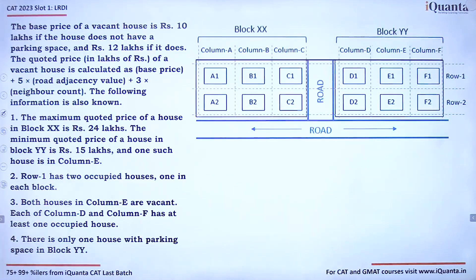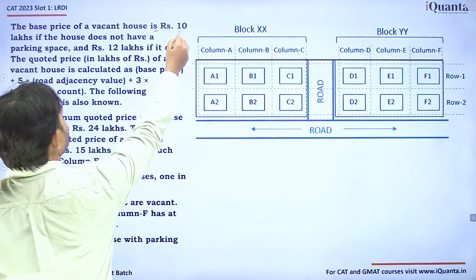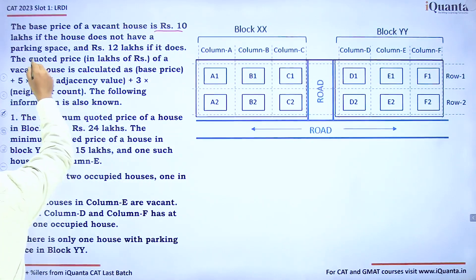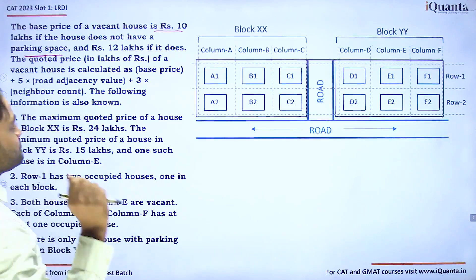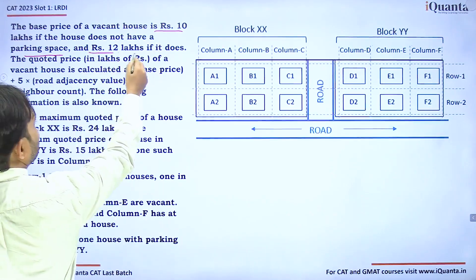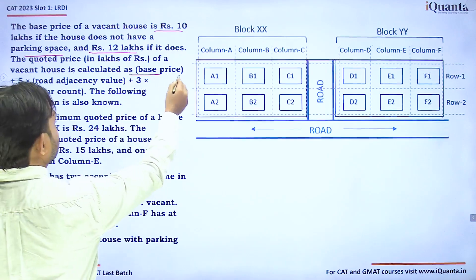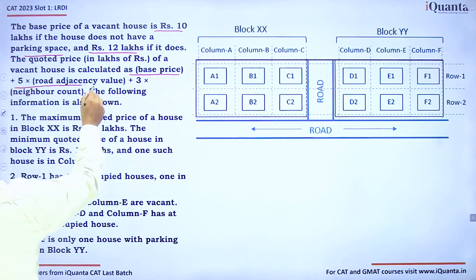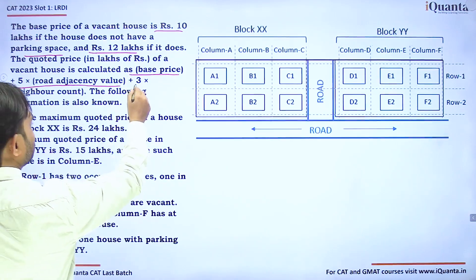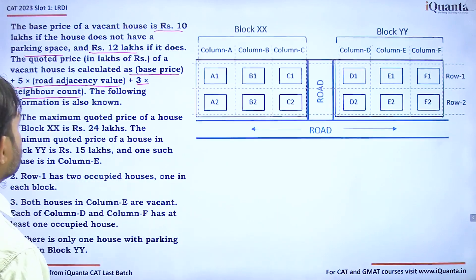The base price of a vacant house is 10 lakhs if it does not have parking, and 12 lakhs if it does. The quoted price of a vacant house is calculated as: base price + 5 × road adjacency + 3 × neighbor count.